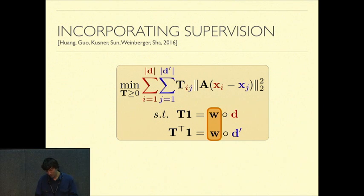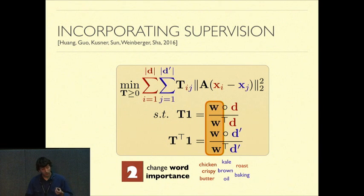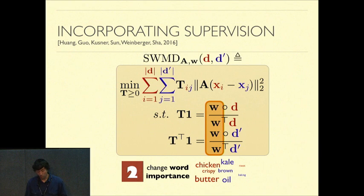The second way we'll supervise this distance is by introducing what we like to call word importance weights, which element-wise multiply these histogram weights, d and d prime. And to make sure we again have a distribution, we'll divide by the inner product. Intuitively what this will do is it'll up weight words that are important for classification and down weight words that aren't. Like chicken is important for identifying that a recipe is non-vegan. We'll call this method the supervised word movers distance.